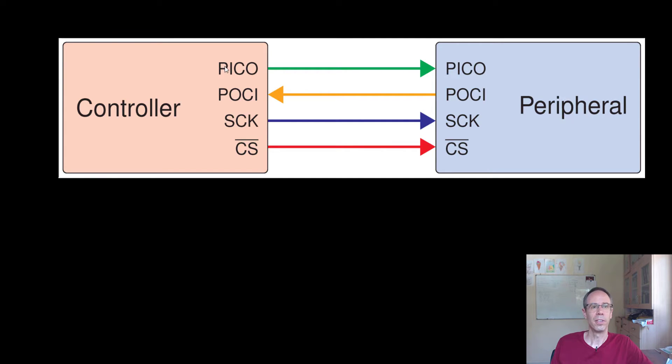POCI is the other direction - peripheral out controller in. In earlier times mostly used as MISO master in slave out. SCK is a clock line. CS is chip select, in earlier times SS slave select, and it's to activate the peripheral.